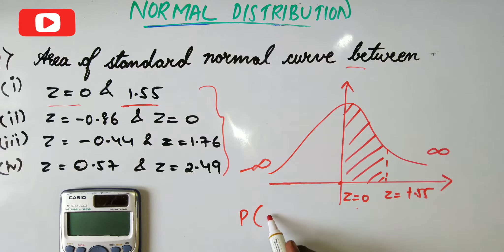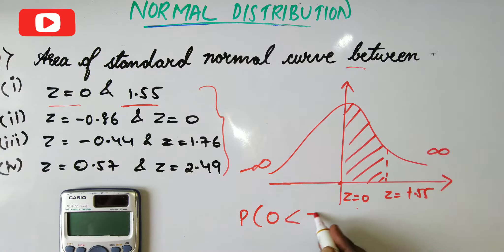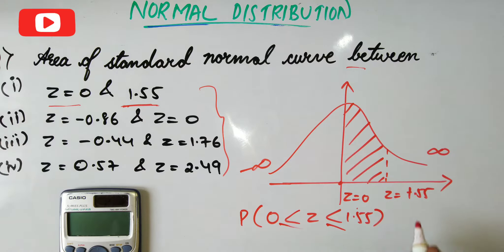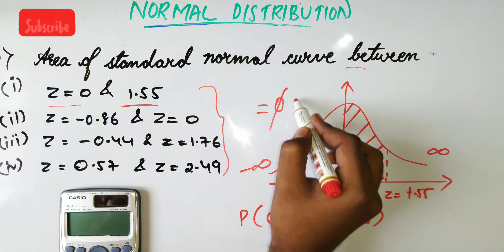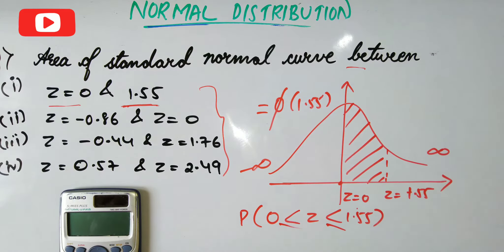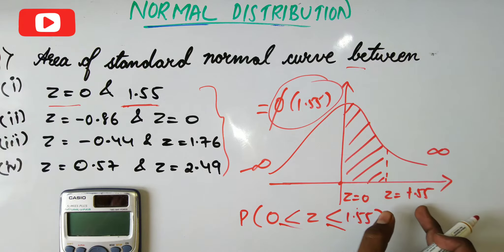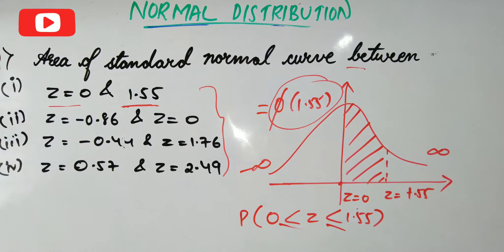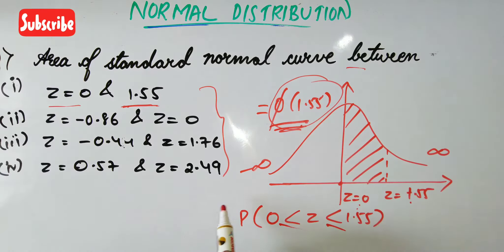P(z) varies from 0 to infinity, but we need to calculate from 0 to 1.55. Remember the equal sign also applies. Now, this value will be equal to φ(1.55) itself. Whenever you need to calculate from 0 to some value, you can directly go for the phi of that value. So φ(1.55) means the area from 0 to 1.55.